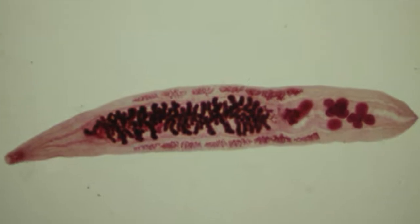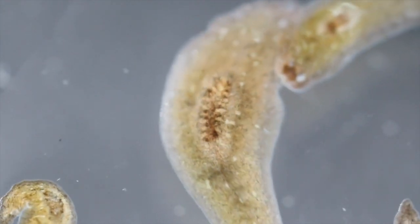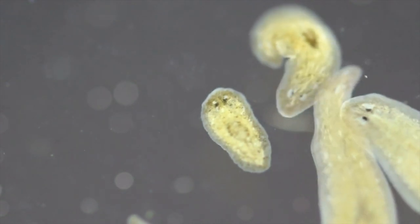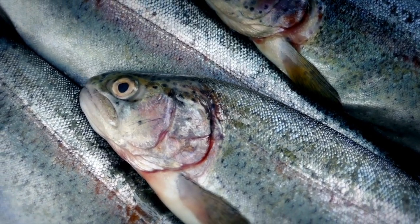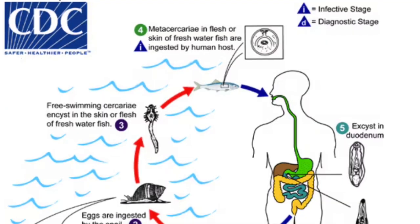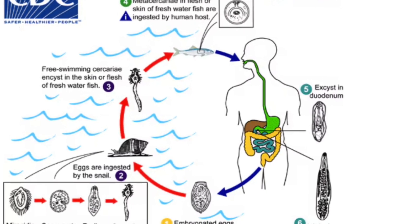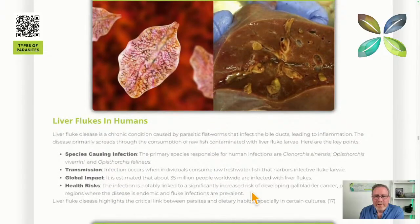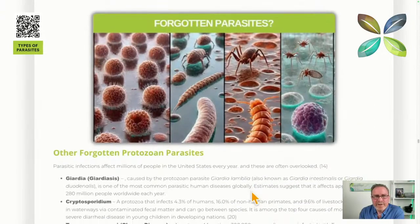Liver flukes look almost like a little leaf or small fish. You can get dozens or more of these inside the liver, interfering with liver function. There are several species, and freshwater fish is the most common way of getting them. 35 million people worldwide are affected. Liver flukes are particularly associated with developing gallbladder cancer. A powerful parasite program using herbs and liver-cleansing herbs can help the body rid itself of liver flukes.